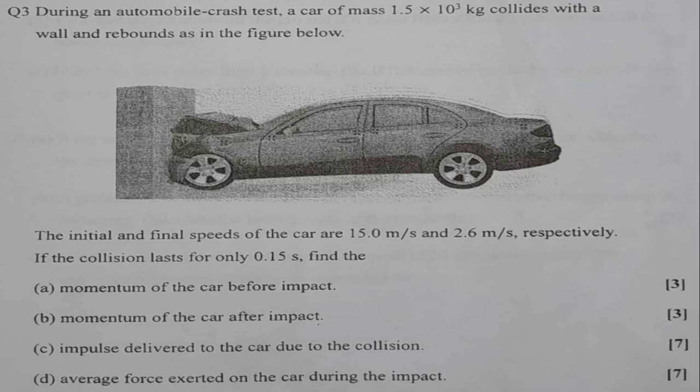The question is: During an automobile crash test, a car of mass 1.5 × 10³ kg collides with a wall and rebounds, as shown in the diagram. The initial and final speeds of the car are 15 m/s and 2.6 m/s respectively. If the collision lasts for only 0.15 seconds, find the required quantities.